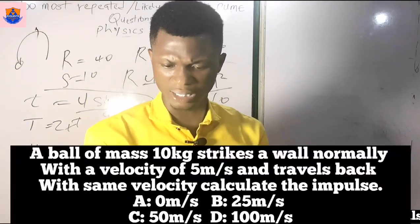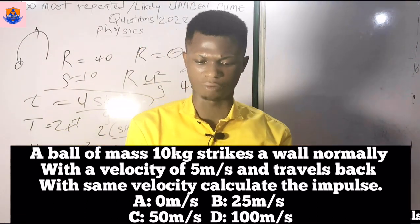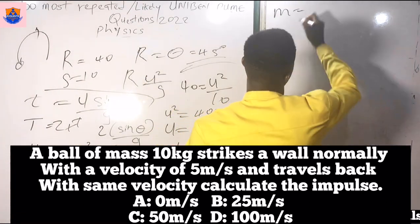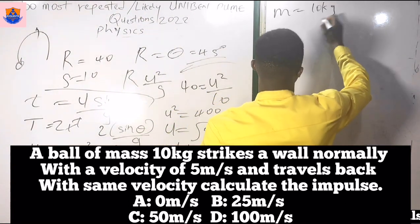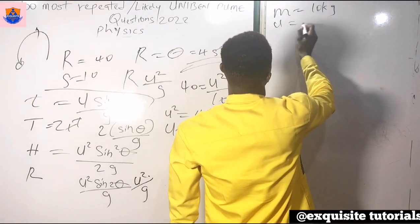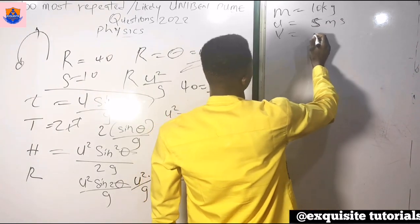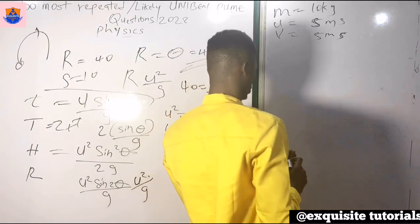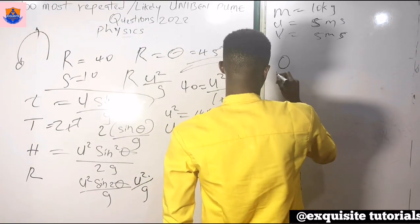Question 14: A ball of mass 10 kg strikes a wall normally with a velocity of 5 m/s and travels back with the same velocity. Calculate the impulse. Mass = 10 kg, initial velocity u = 5 m/s, returns with velocity = 5 m/s.